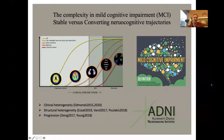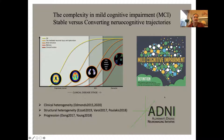Mild cognitive impairment, MCI — the intermediate stage between cognitively normal and dementia. MCI is characterized by large heterogeneity, both in terms of brain and clinical outcome. While some patients can live with MCI for several years without progressing to dementia and some even reverse back to normal, unfortunately 10 to 15% will develop Alzheimer's disease each year.